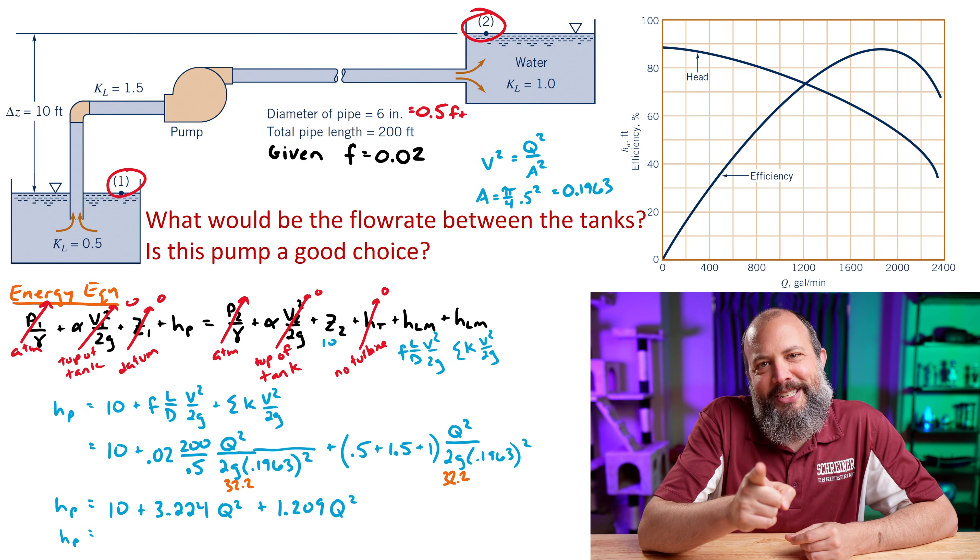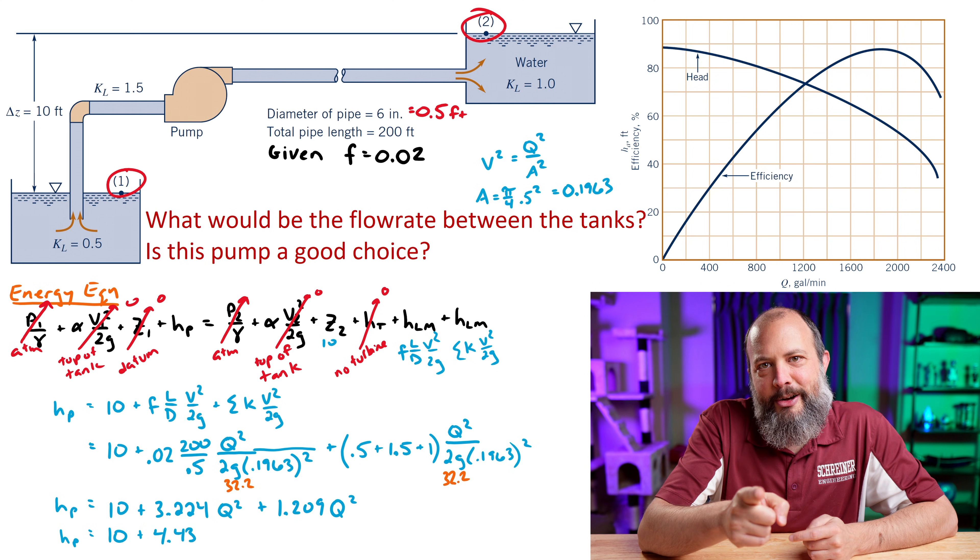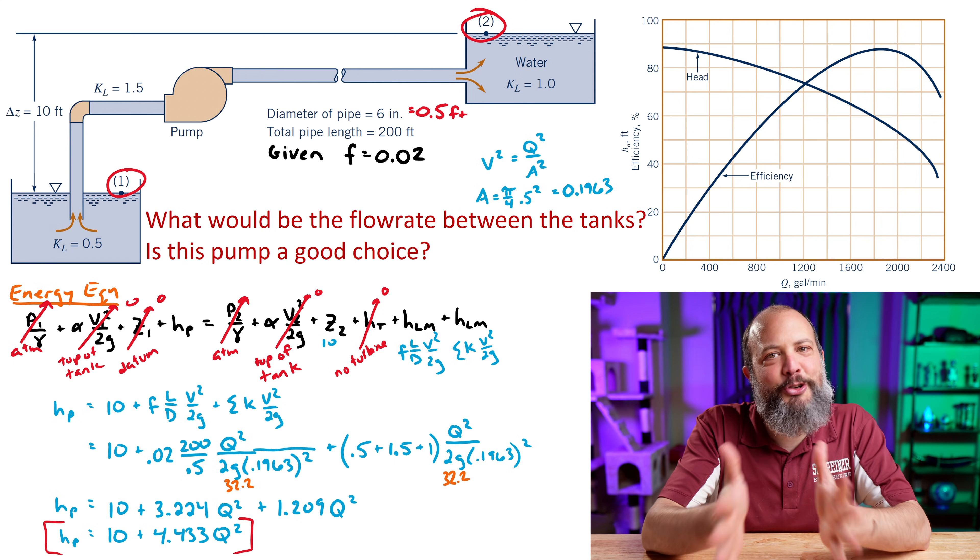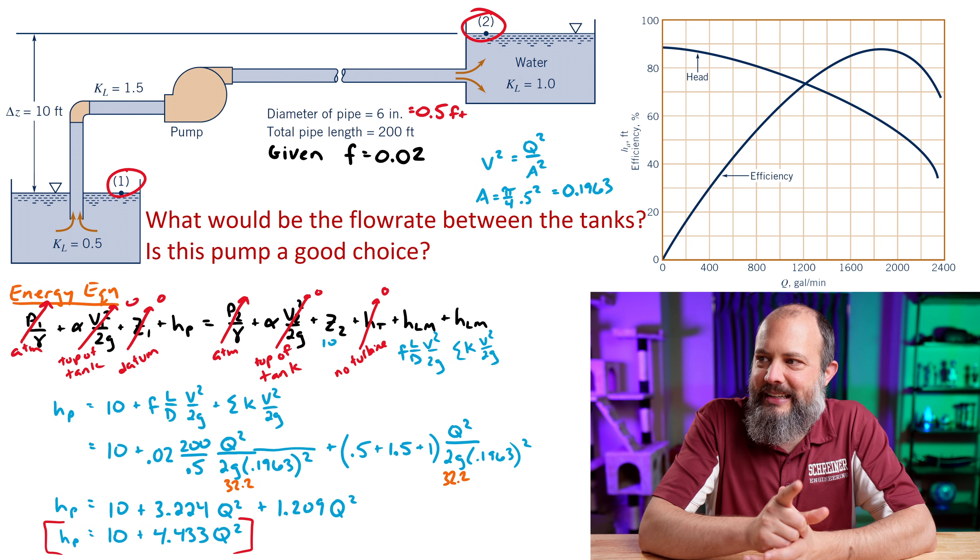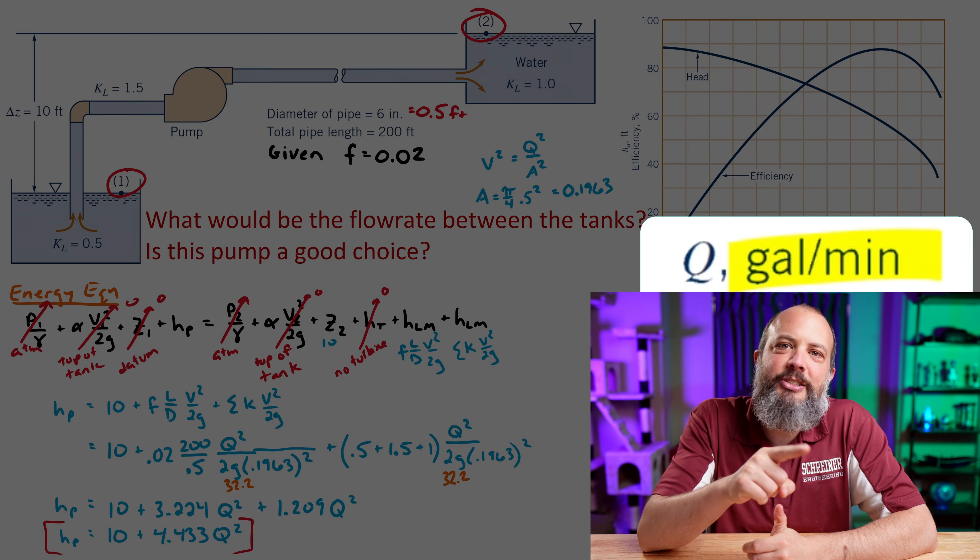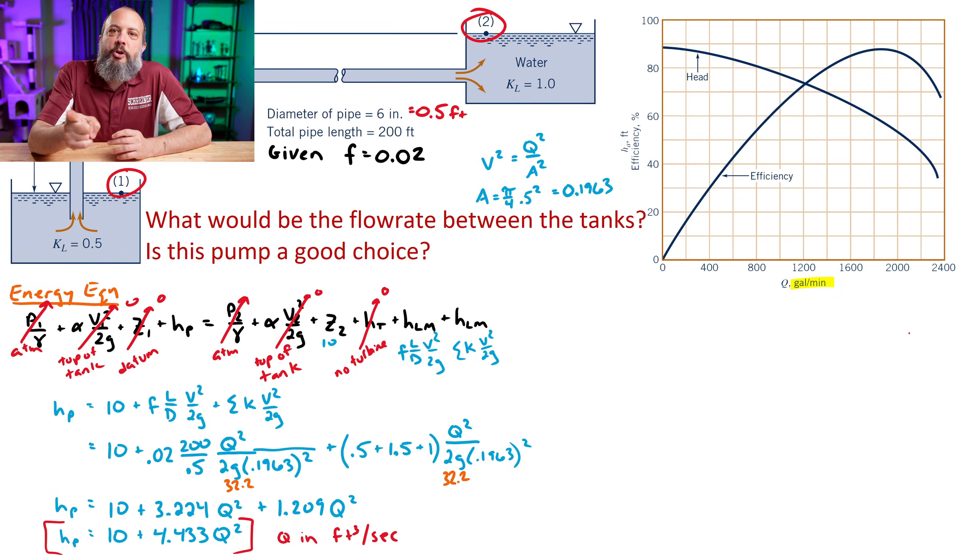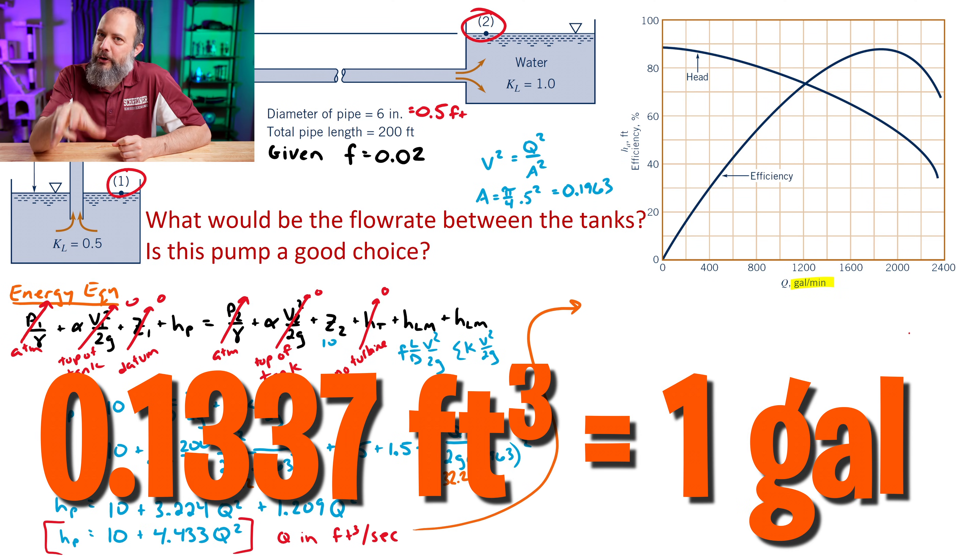But what units is this value of Q in right now? My velocity was in feet per second, and my area was in feet squared, so my Q is actually in cubic feet per second, which does not match the x-axis of the plot, which is in gallons per minute. And every online gamer who's not a noob will remember that the conversion from gallons to feet cubed is going to be 0.1337. So 0.1337 is leet, right? That is the conversion. That's how many cubic feet are in one gallon.